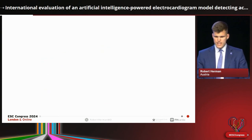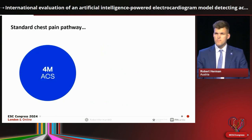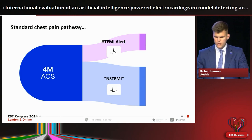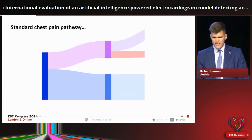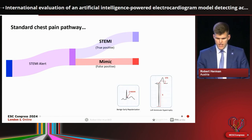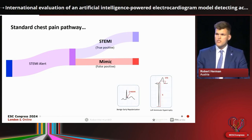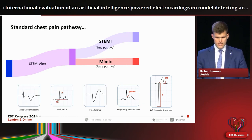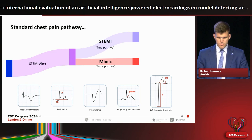If you look at how the standard chest pain pathways identify these patients, for roughly 30% we trigger the so-called STEMI alert — and this is frequently associated with false positives. These can include very benign ECG manifestations of ST elevation like early repolarization or LVH, or more challenging clinical scenarios like hyperkalemia or pericarditis.